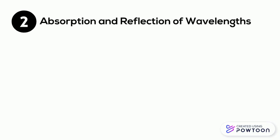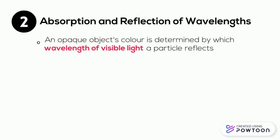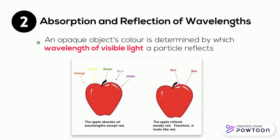Opaque object particles absorb and reflect different wavelengths of light. The wavelength that is reflected determines the color of an object. For example, an apple reflects red wavelengths and absorbs all remaining ones, resulting in the apple being red.